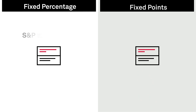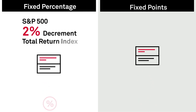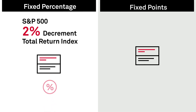For example, an S&P 500 2% decrement total return index would subtract a daily portion of 2% from the total return of the S&P 500 each day.